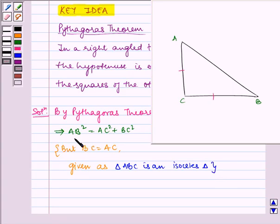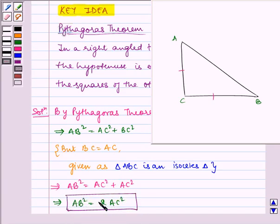So, it implies AB square is equal to AC square plus AC square, which implies AB square is equal to twice of AC square, and this is our required result.